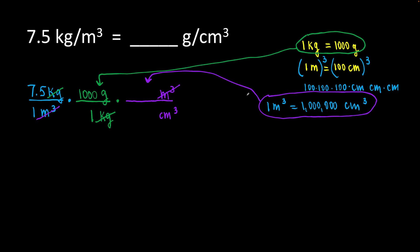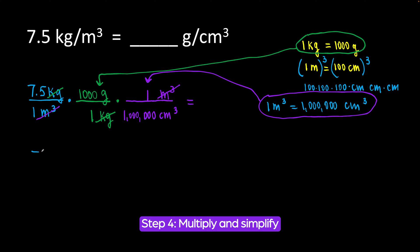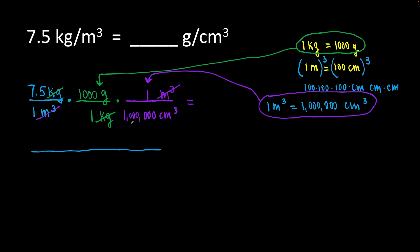Now I plug in the numbers from the conversion factor. One cubic meter is equal to 1,000,000 cubic centimeters. We have grams per centimeter cubic — we got what we needed. Basically, we are multiplying fractions here. All we needed is to set up the conversion factors correctly so our original units cancel out and we are left with the units we need. Let's collect all the numbers in the numerator: 7.5 times 1,000 times 1. In the denominator: 1 times 1 times 1 million cubic centimeters.